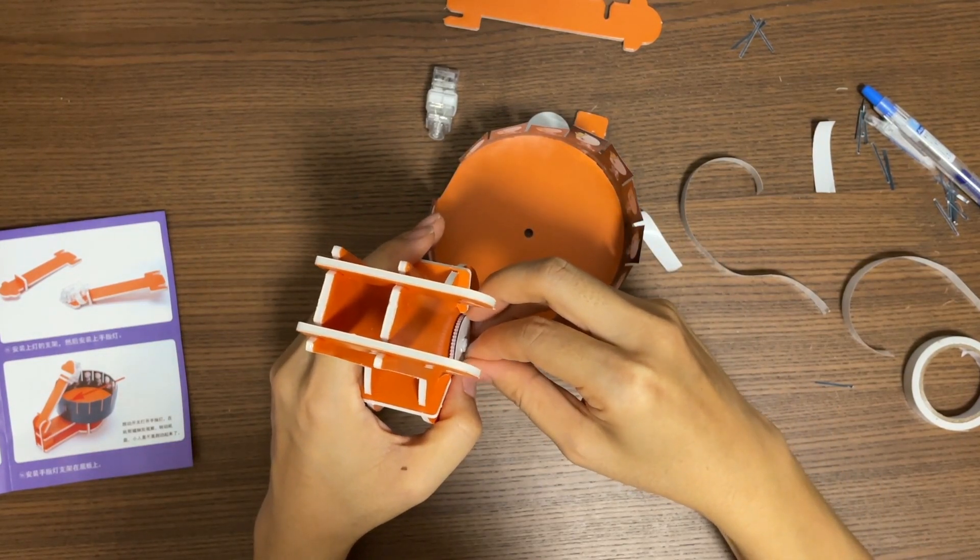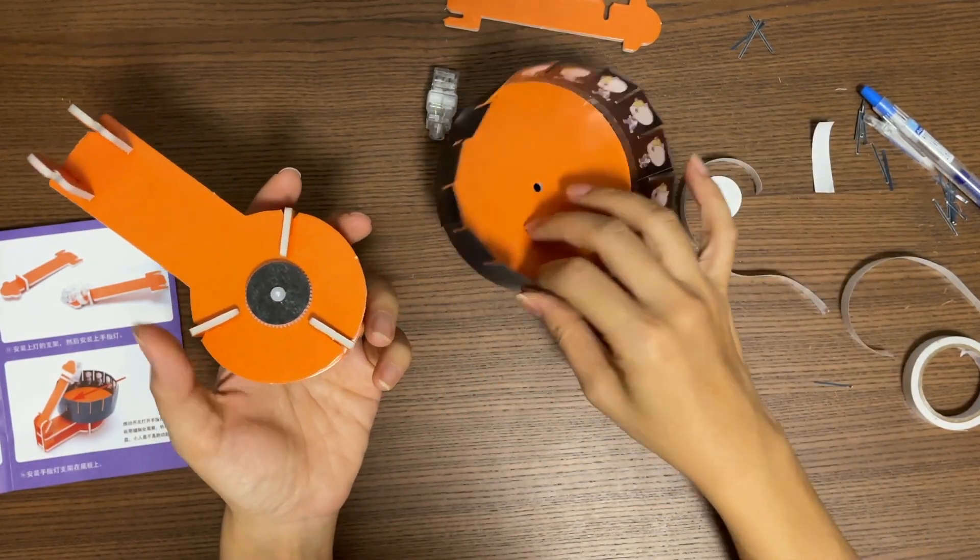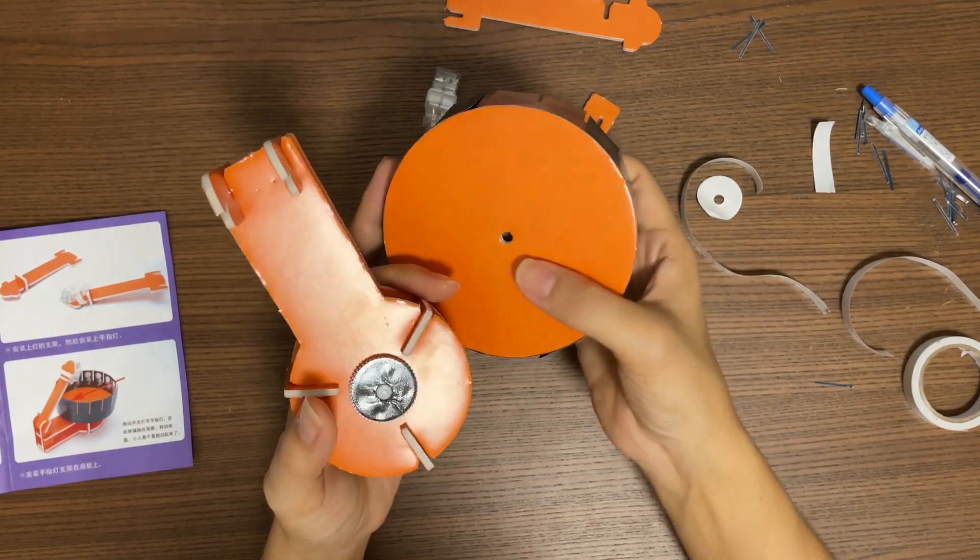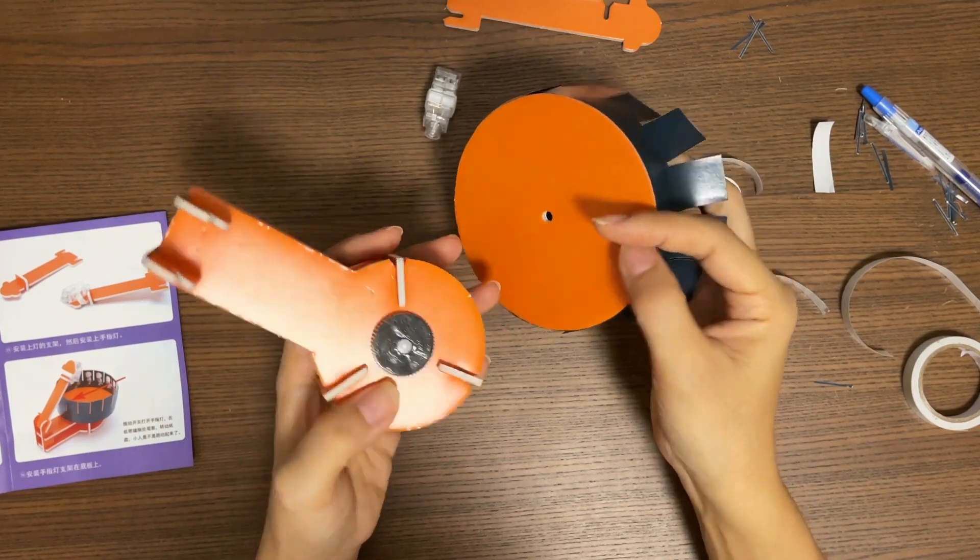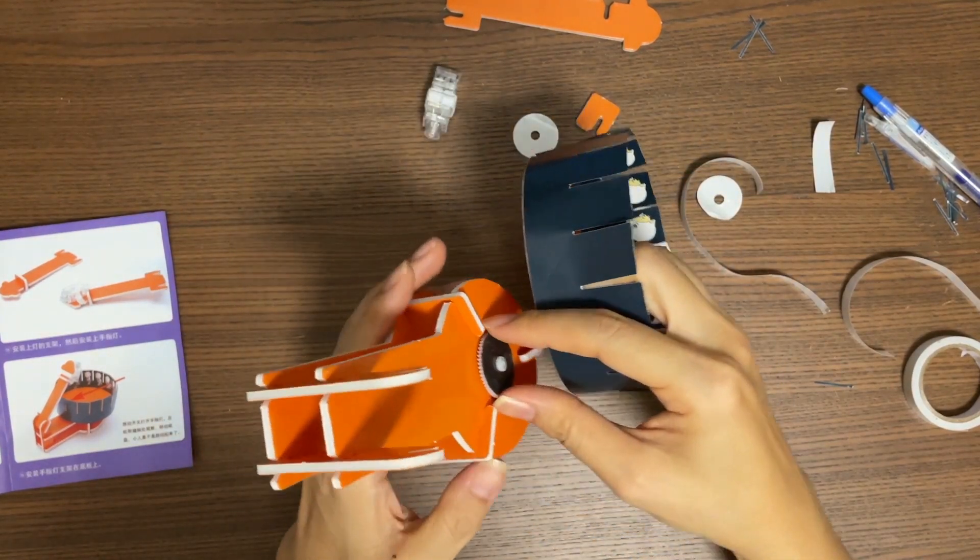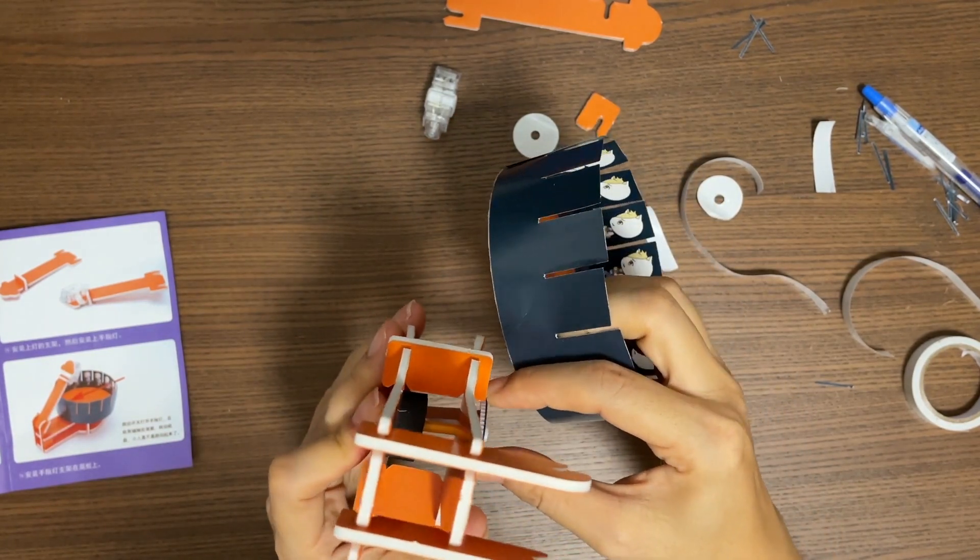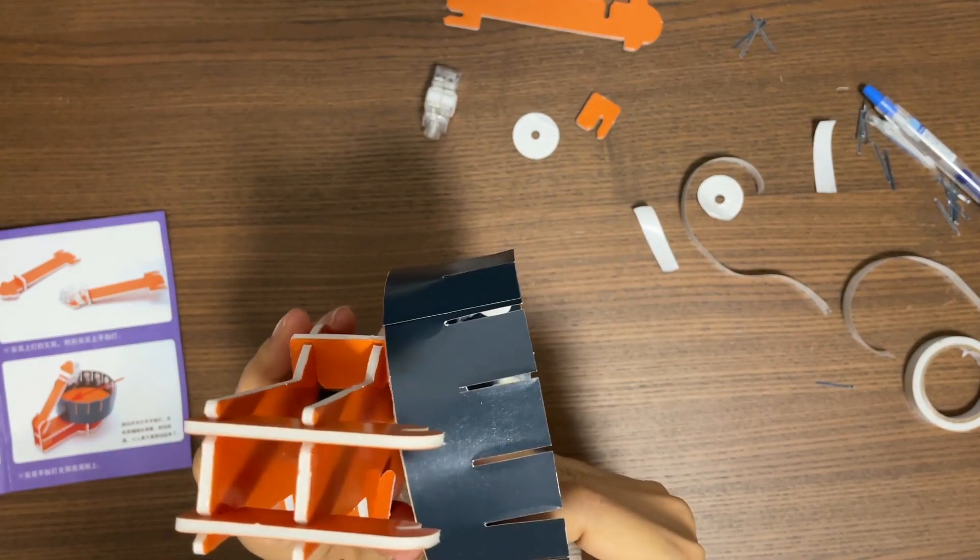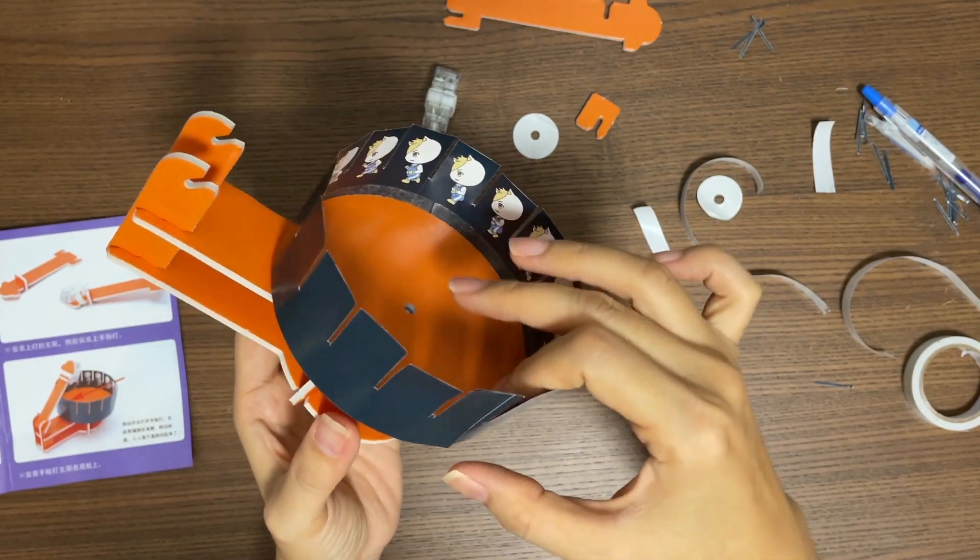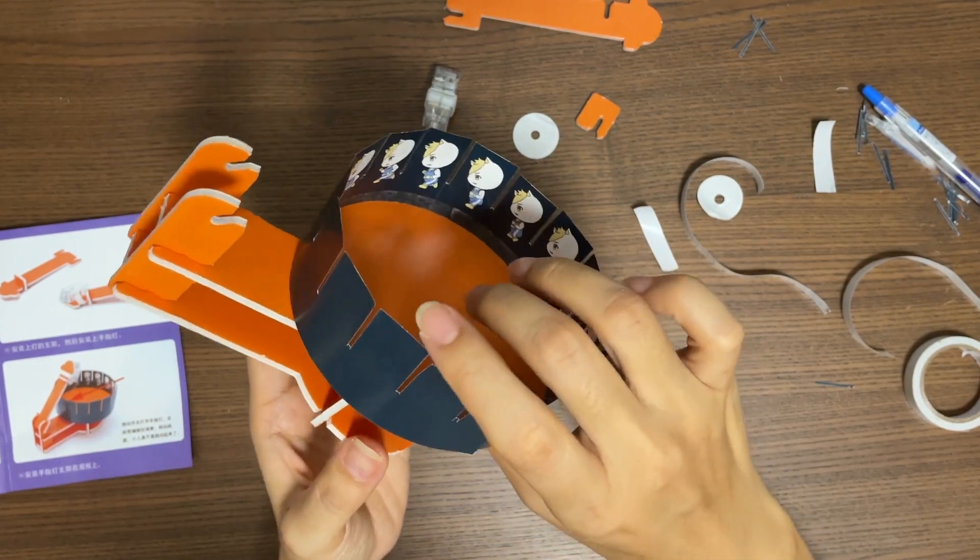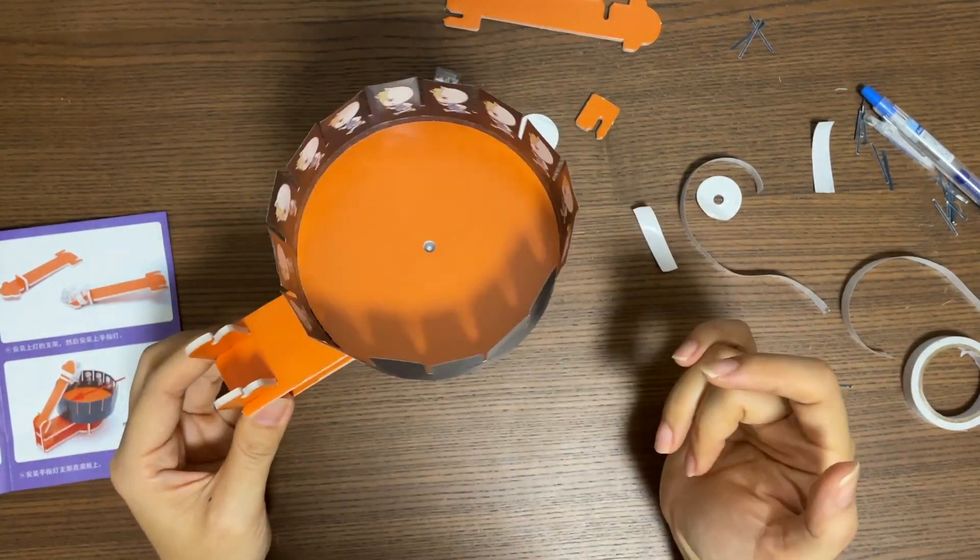And remember the double-sided tape that we pasted on the one side. Now we can remove the top layer from this double-sided tape and put the circle on top of it. Make sure this circle can be spinned easily.